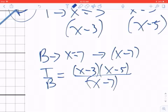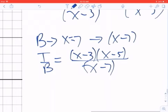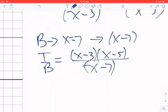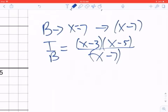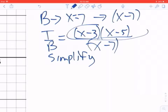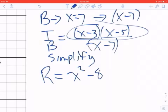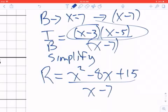You can see here that the degree or the exponent in the top is bigger than the bottom, because the top is going to end up with x squared and the bottom is going to end up with just x in it. Let's simplify that. If I expand out that right there, my rational function r, which is the top over the bottom, is going to be x squared minus 8x plus 15 divided by x minus 7.